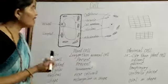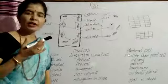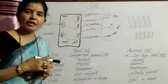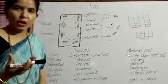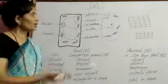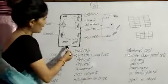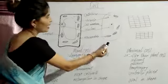If we can't see a cell with our naked eyes, but when the cells group together, it forms an organ which we can see easily. Now, let's talk about cell. Here you can see two cells: plant cell and animal cell.